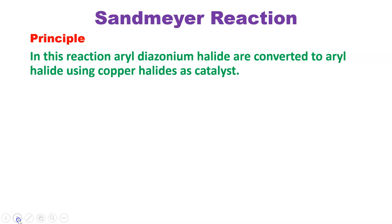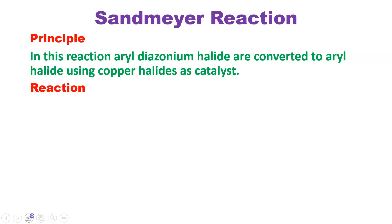The principle: in this reaction, aryl diazonium halides are converted to aryl halides using copper halide as a catalyst. The statement says that it is a reaction of an aryl diazonium halide in the presence of a copper halide as a catalyst, and we get aryl halides. Aryl means it is a benzene ring.